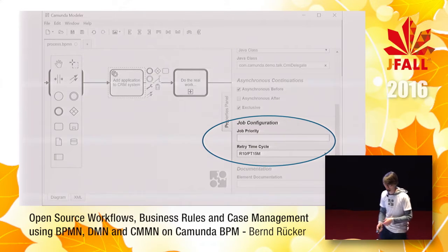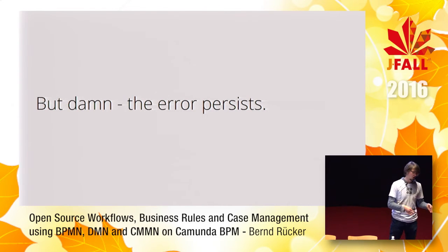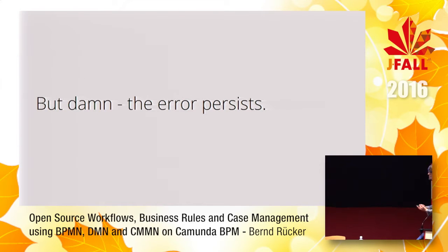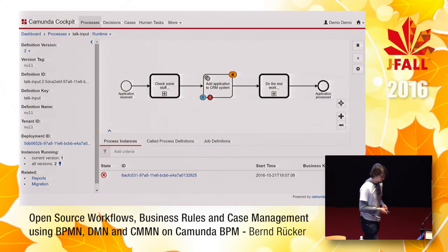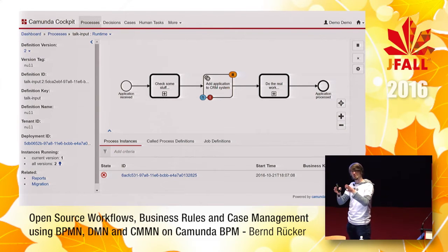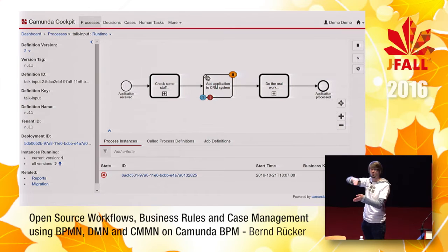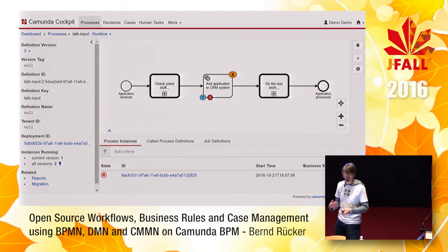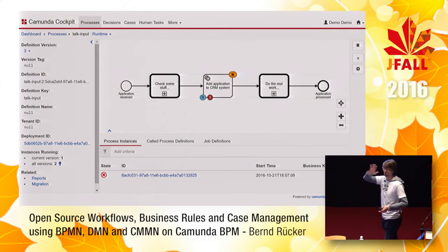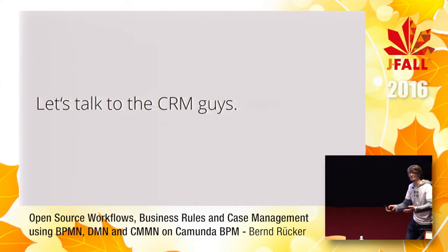If it's not a network error but a problem in the CRM system, retrying won't help. What you can do is pause the system at that service task. All process instances keep flowing but stop at that step, queuing up. You can even resume one instance at a time to test if the fix worked, then flood the system again once the problem is resolved.